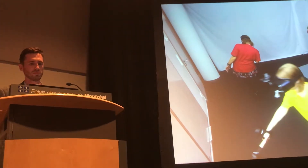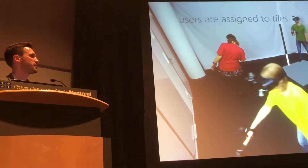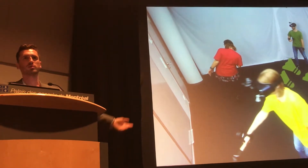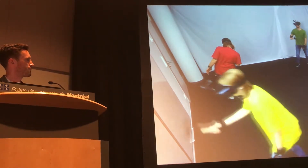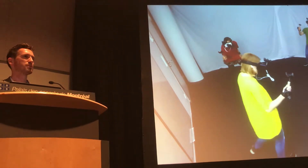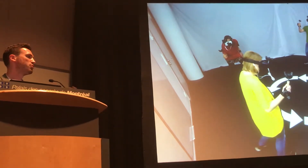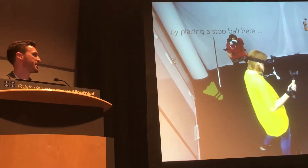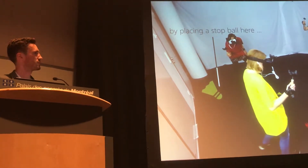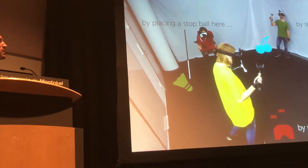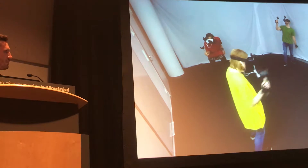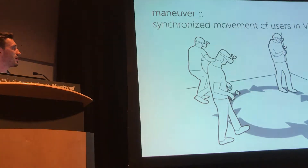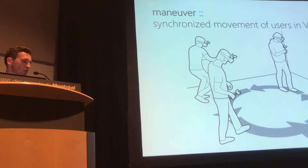How does the system work? In the beginning, we assign each user an application tile, and we keep the user in the tile by placing rewards. For example, we play the shuttlecock always into that corner of the court. But after a while, users will feel confined, and this is why we move all users synchronously — by placing a stopover in front of the net, or by moving the barrier in Space Invaders, or putting a cherry somewhere else. We call this a maneuver, which is basically a synchronized movement of users in virtual space.